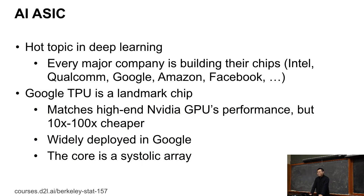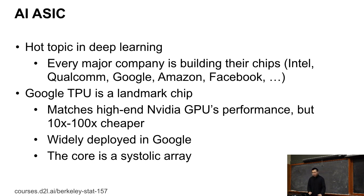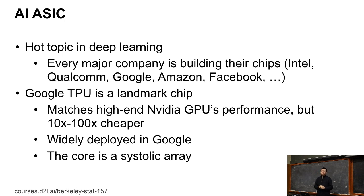The other one is called AI ASIC, or AI chip. It's a hot topic in deep learning. Every major company — Intel, Qualcomm, and IT companies like Google, Facebook, Amazon — is building their own AI chips. Among them, Google TPU is kind of the earliest and most successful. Google TPU can match high-end NVIDIA GPU performance, providing around 100 TFLOPs floating point. If you buy a high-end NVIDIA GPU it costs maybe $10,000, but if you produce a TPU yourself it costs maybe $500 — that's a 20x difference.